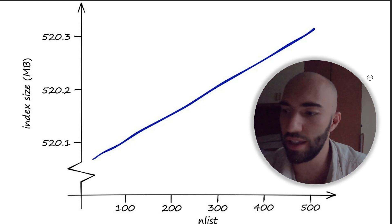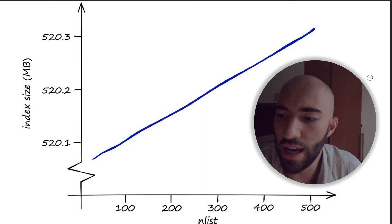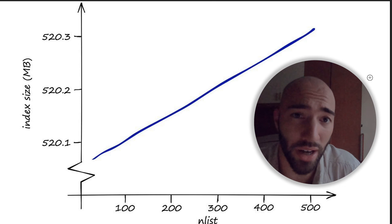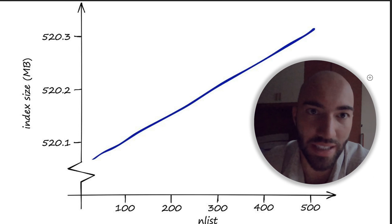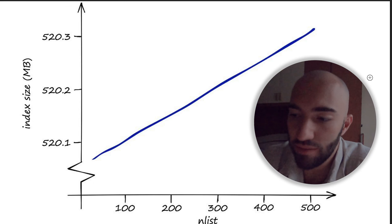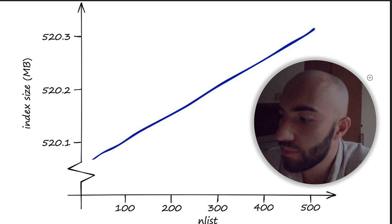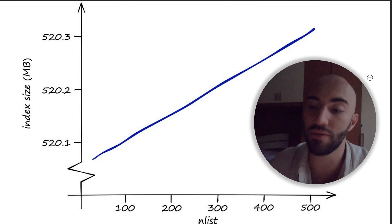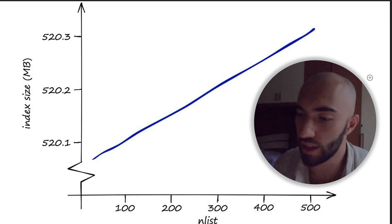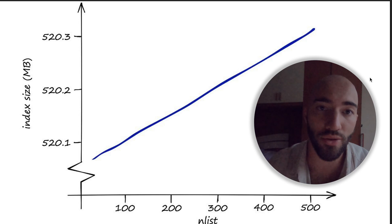That's it for this video. We covered quite a lot — all these indexes are super useful and interesting. Playing around with the parameters, seeing what's faster or slower, where the good quality is, is super useful for actually understanding them. Going forward, I want to explore each of these indexes in more depth, because we've only covered them at a very high level. In future videos and articles, we'll go into much more depth. Thank you very much for watching and I'll see you in the next one.